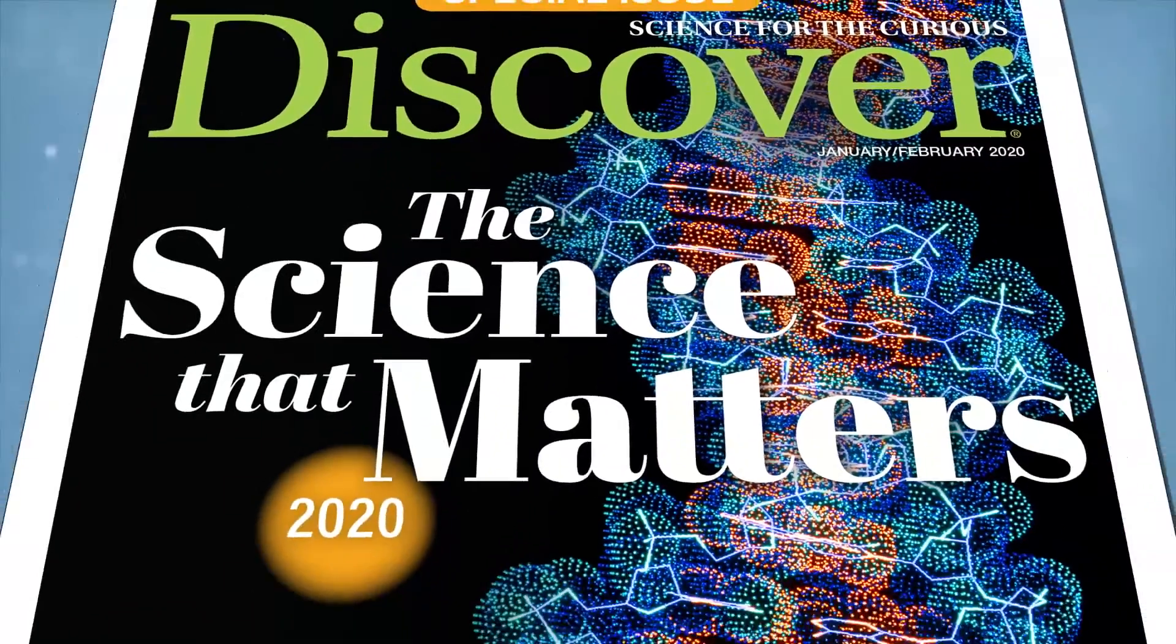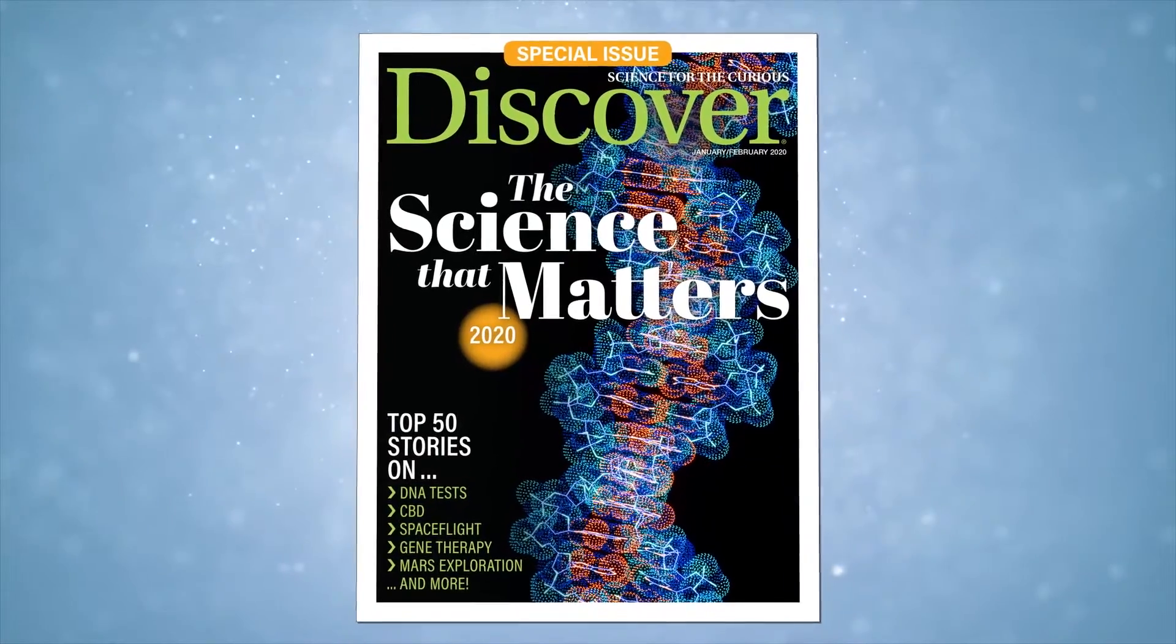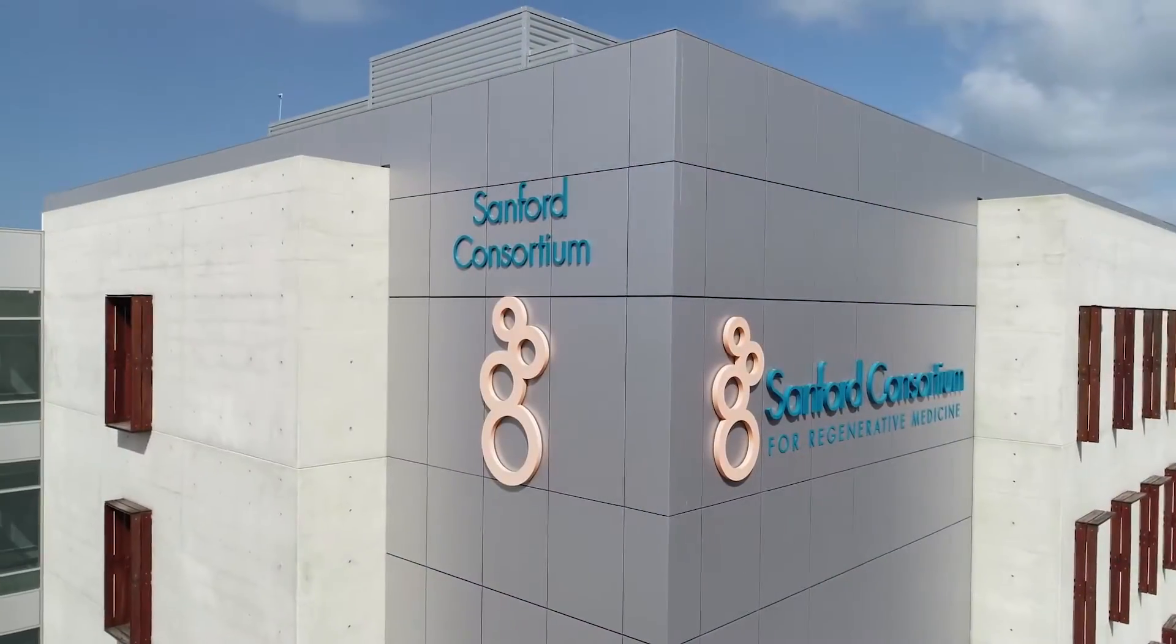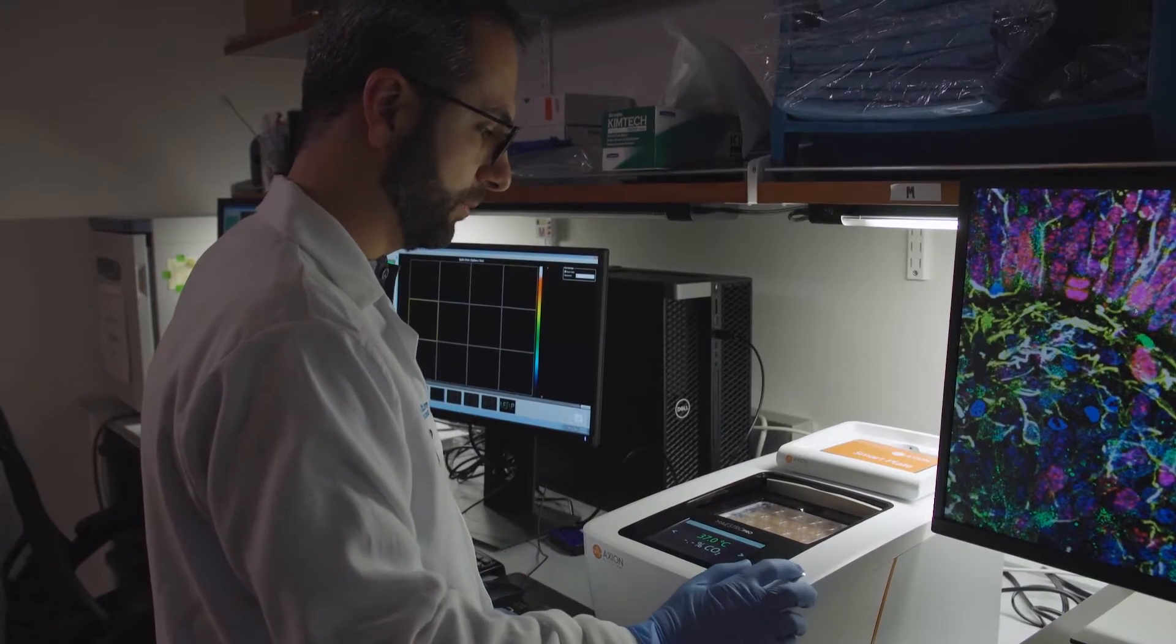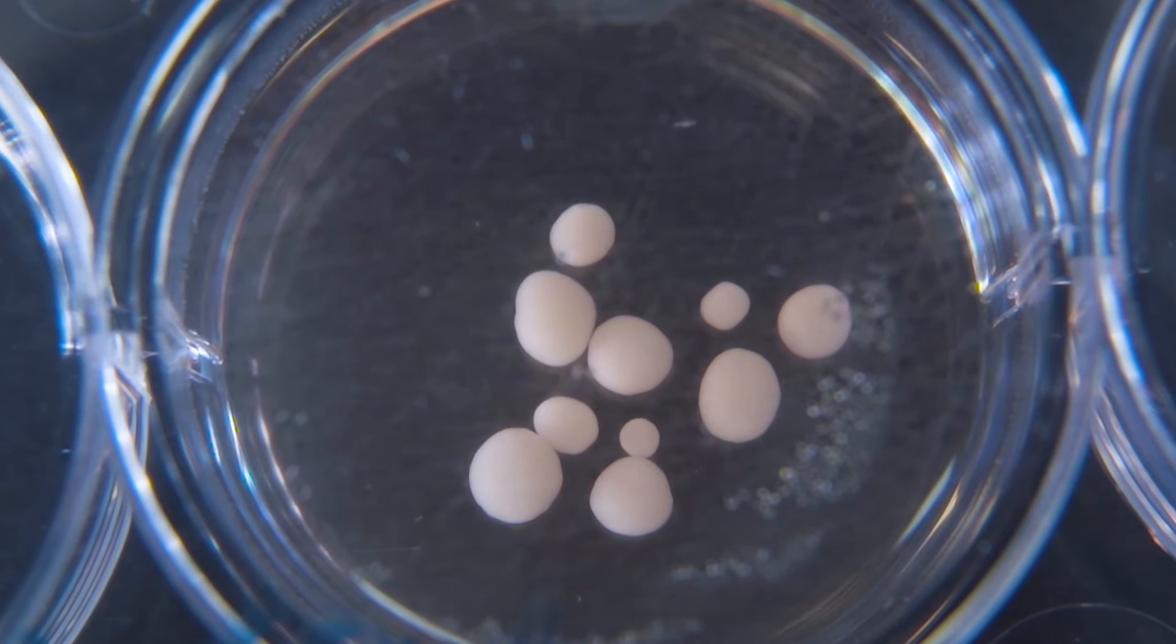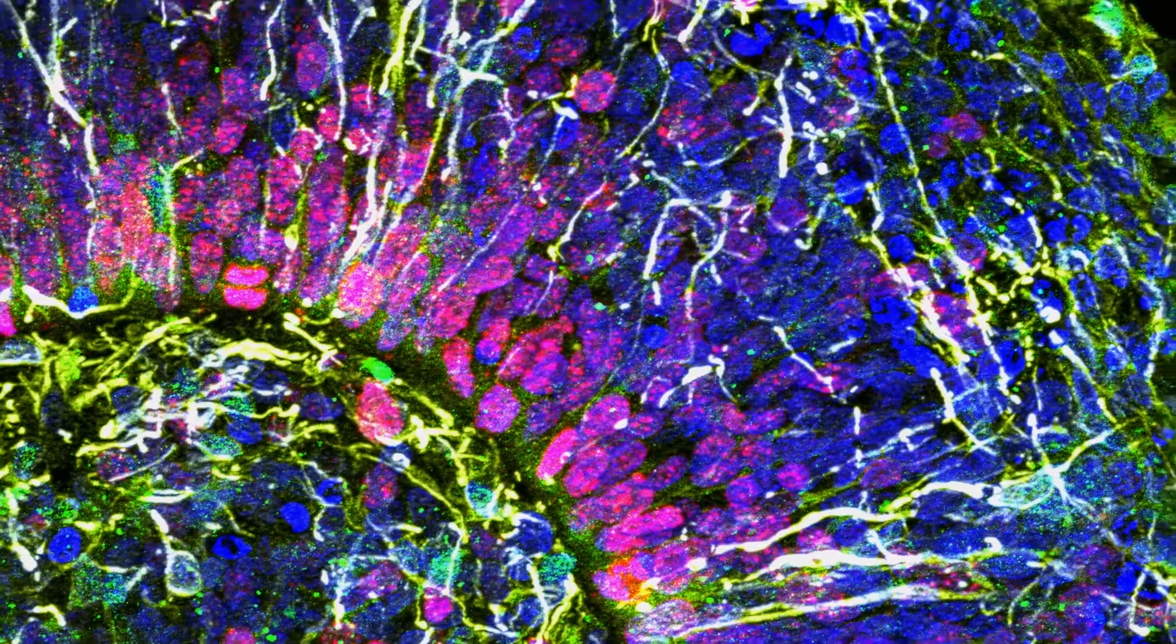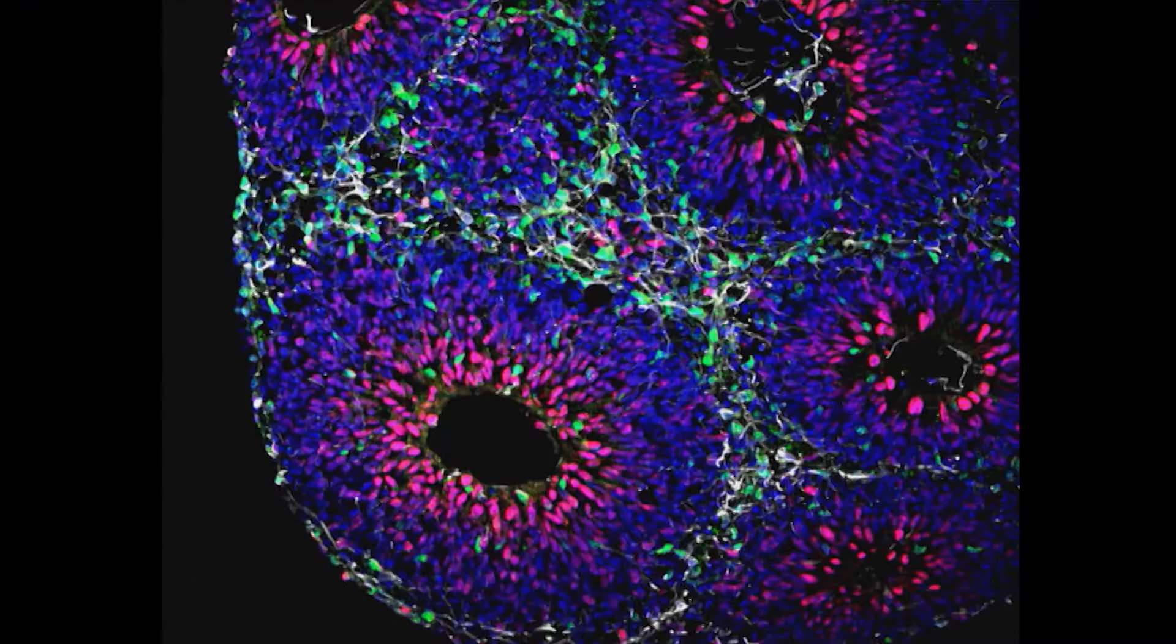Acclaimed by Discover Magazine as one of the top 10 most significant scientific achievements of 2019, researchers with the UC San Diego Stem Cell Program, working at the Sanford Consortium for Regenerative Medicine, witnessed and investigated the emergence of complex neural signals in self-organized colonies of cortical neurons. They are called cortical organoids, or brain organoids, because they have many of the characteristics of a developing brain.